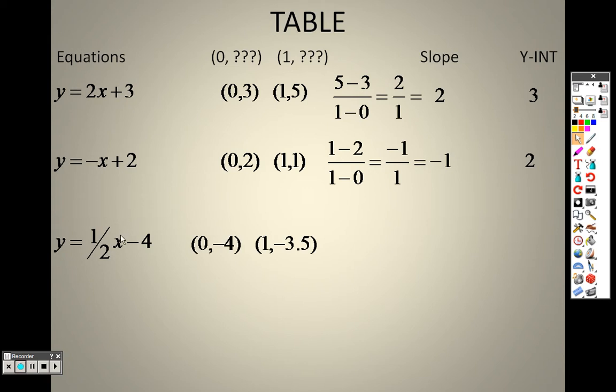Alright, when I look at this, I plug in a 0, I get negative 4 as my answer. And if I plug in a 1, I get negative 3.5. I still can just plug it all in, right? Negative 3.5 minus negative 4 and 1 minus 0. When I do those, I end up getting a half over 1, or I just get 1 half. 1 half is the number out in front of the x, which is the slope. Negative 4 is the y-intercept because it's hanging out there by itself, so I've got a negative 4 right there.